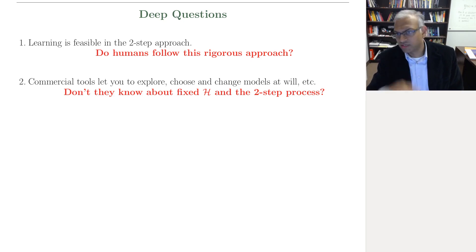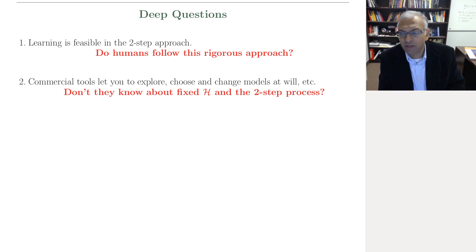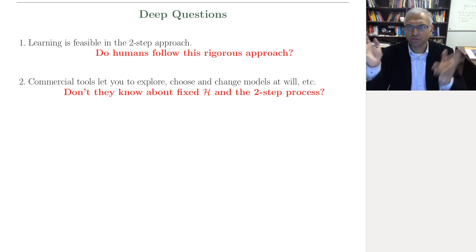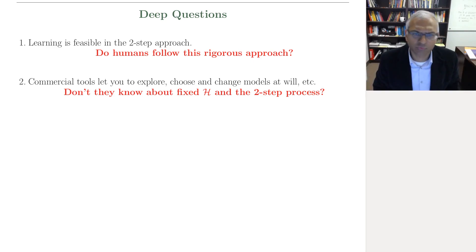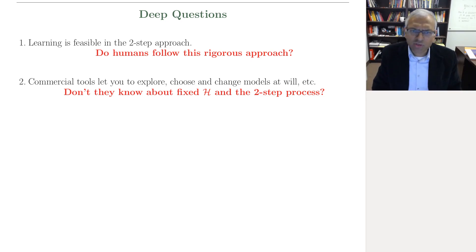Question 2: there are commercial tools out there. You can load the data, explore a few features, try one model, then another, and ultimately settle on what you want — and it shows you nice statistics and pictures. Don't these commercial tools know about fixed H and the two-step process? What's going on?